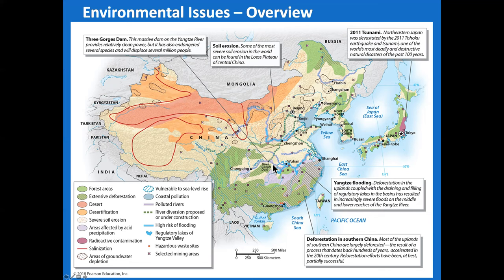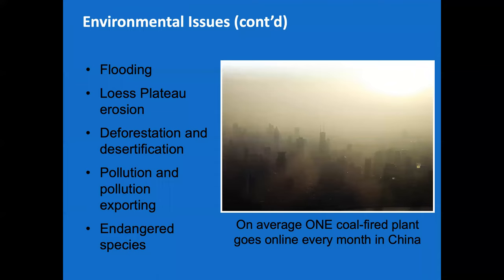Water is a big deal in China because the majority of the water is in the south, yet the majority of the population is in the north. They've taken into account some rather impressive engineering projects to deal with this. Loess — L-O-E-S-S — is a type of glacially deposited sand and dust that looks yellowish and can be easily moved by wind.